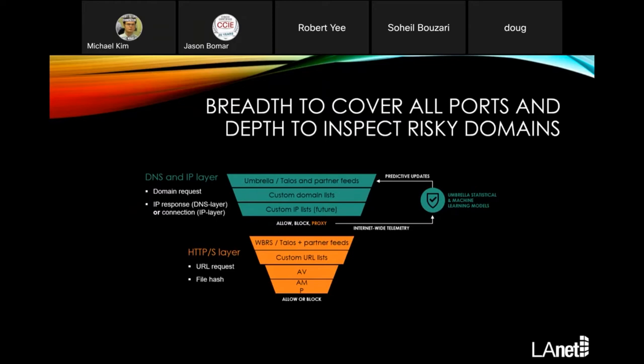This is a breakdown of where Umbrella sits in the different security layers — specifically the DNS and IP layer. Umbrella works with Talos and partner feeds, and you can tailor Umbrella with custom domain lists or custom destinations to allow, block, or proxy. The proxy capability depends on how you're using Umbrella. It can allow you to choose how to treat certain types of traffic. Once traffic gets past Umbrella, it goes through normal protections like your firewall or router, and then maybe antivirus and anti-malware as the connection completes.